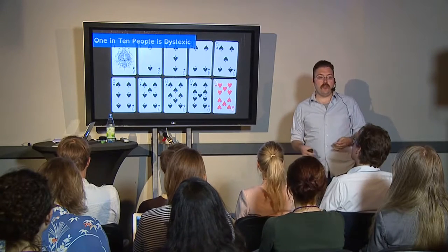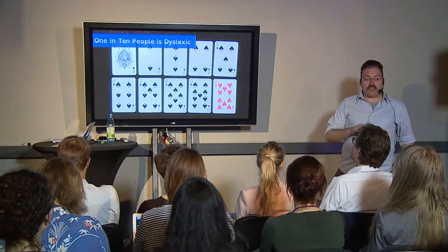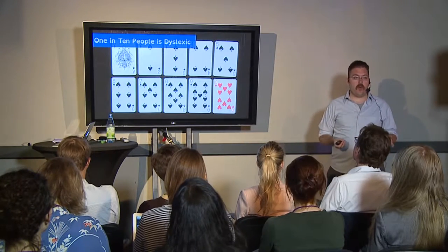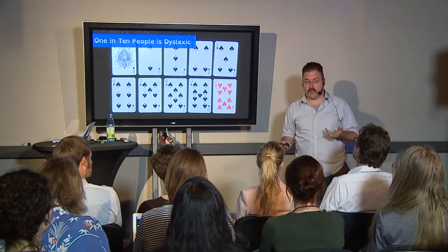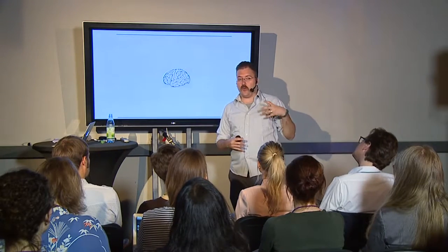1 in 10 people are dyslexic, and I actually think this is a very low number. The scale of dyslexia is very wide — some people are incredibly dyslexic, and some are barely dyslexic and don't even realize they have it. One of the things that struck me in my research is not only how large this number is, but how varied dyslexia can be. We tend to think it's just about reading words incorrectly, but it includes spelling as well.